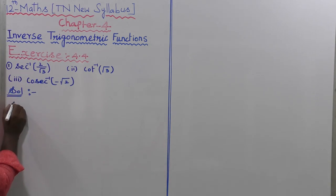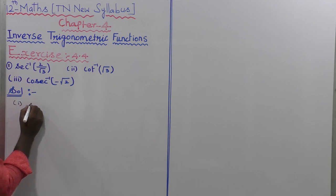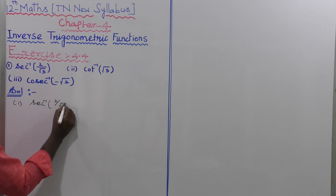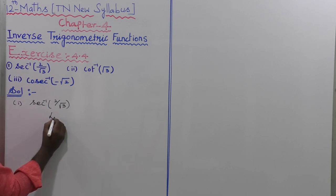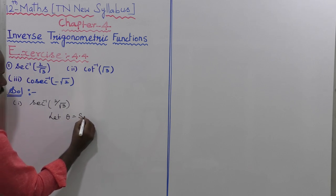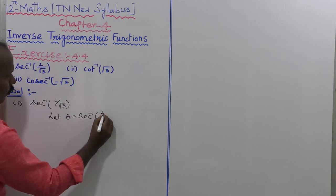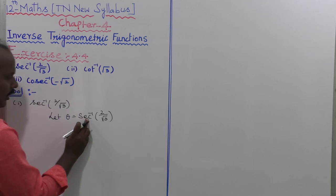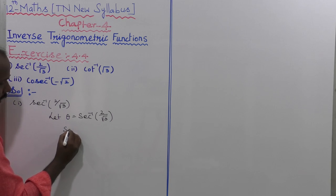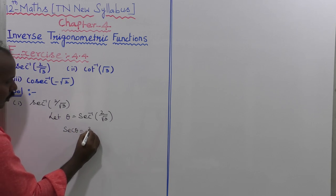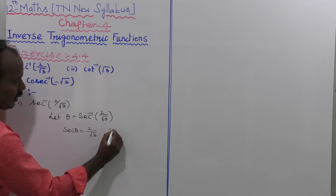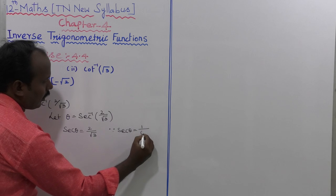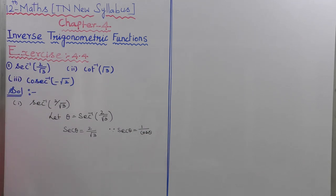Let us take the first subdivision: secant inverse of 2 divided by root 3. Consider theta equal to secant inverse of 2 divided by root 3. Bringing secant to the left side, secant theta equals 2 divided by root 3. Since secant theta equals 1 by cos theta...